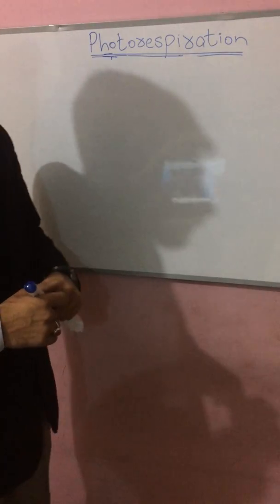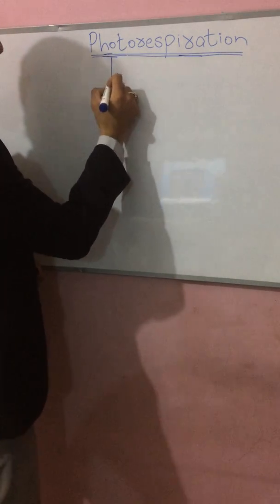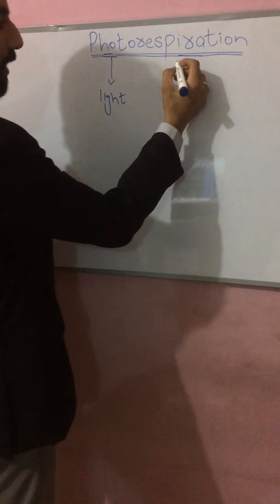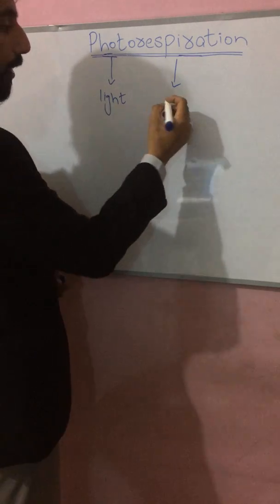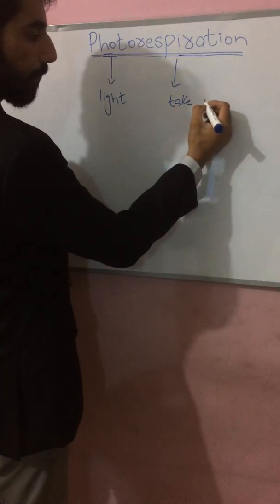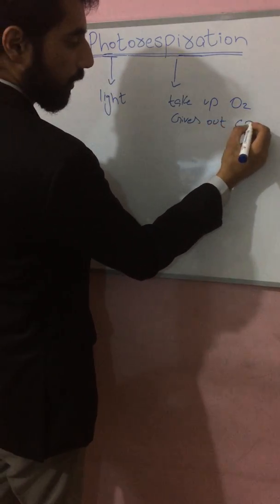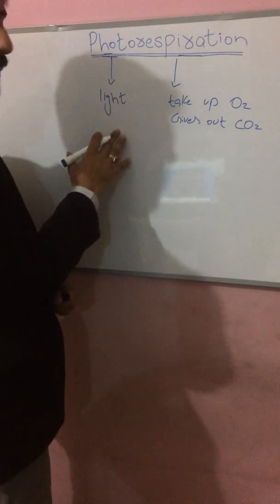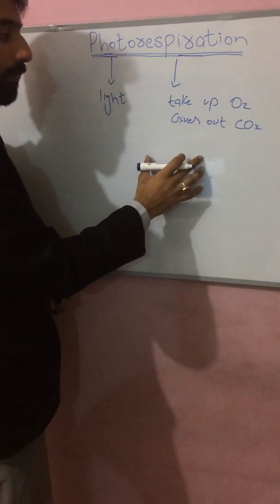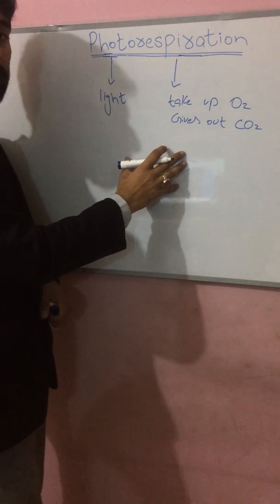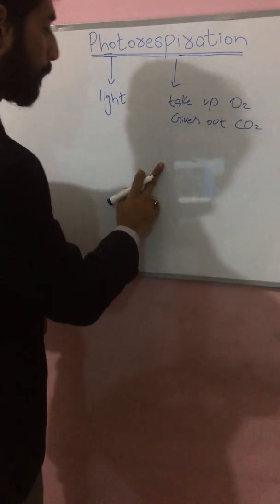Assalamu alaikum. Today we discuss the topic of photorespiration. 'Photo' means light, and respiration is the process in plants where they take up oxygen and give out carbon dioxide. This reaction occurs in daylight, in the presence of sunlight, which is why it is known as photorespiration.